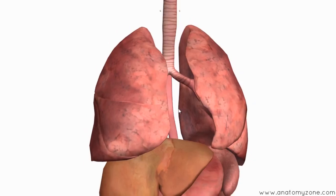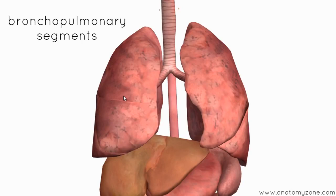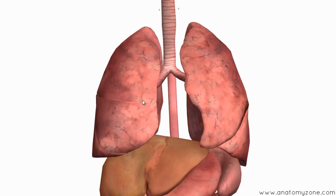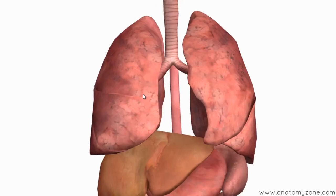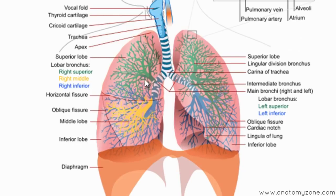The lobes can be further divided into bronchopulmonary segments, and each lung has ten bronchopulmonary segments. These are supplied by the segmental bronchi — the tertiary bronchi. So the lobar bronchi supply the lobes of the lungs, and the segmental bronchi supply the bronchopulmonary segments. In this diagram you can see the three lobar bronchi on the right and the two lobar bronchi on the left, shown in different colors: superior in green, middle in yellow, and inferior in blue.